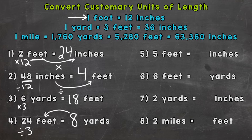Number five: five feet equals how many inches? Each foot has 12 inches, and we have five groups of 12, so we do five times 12, which gives us 60 inches.